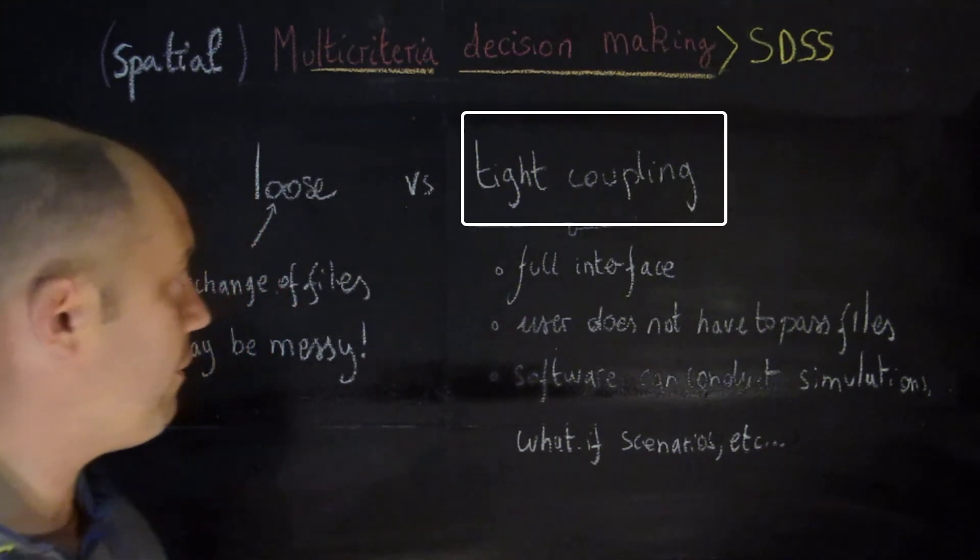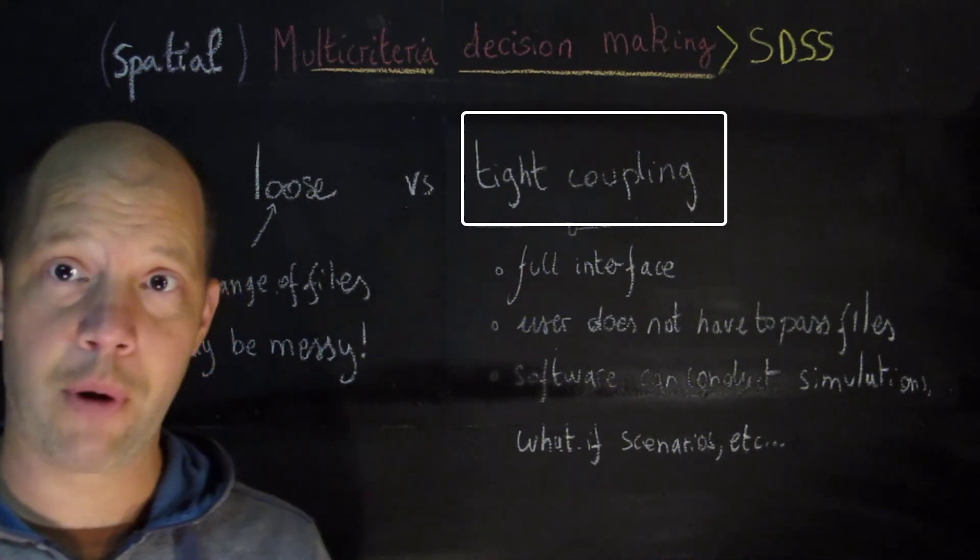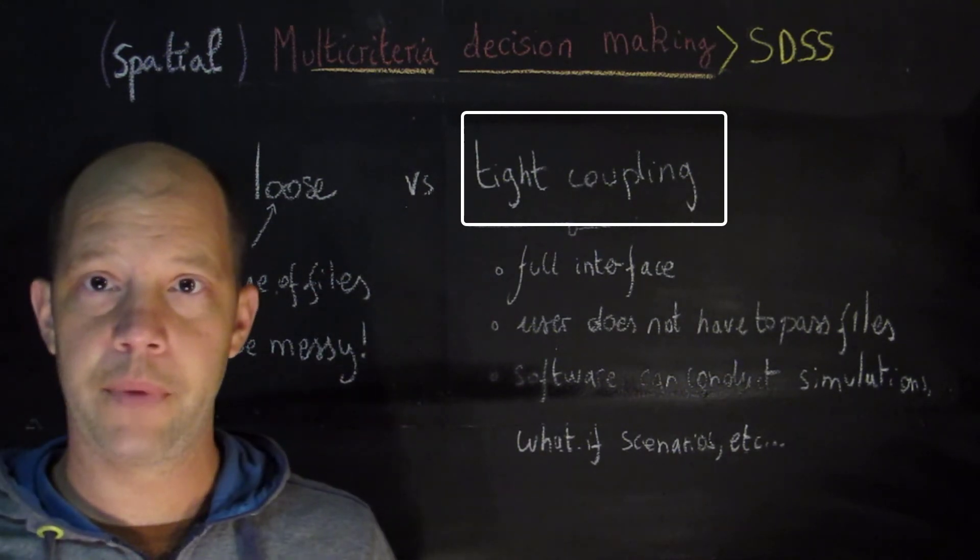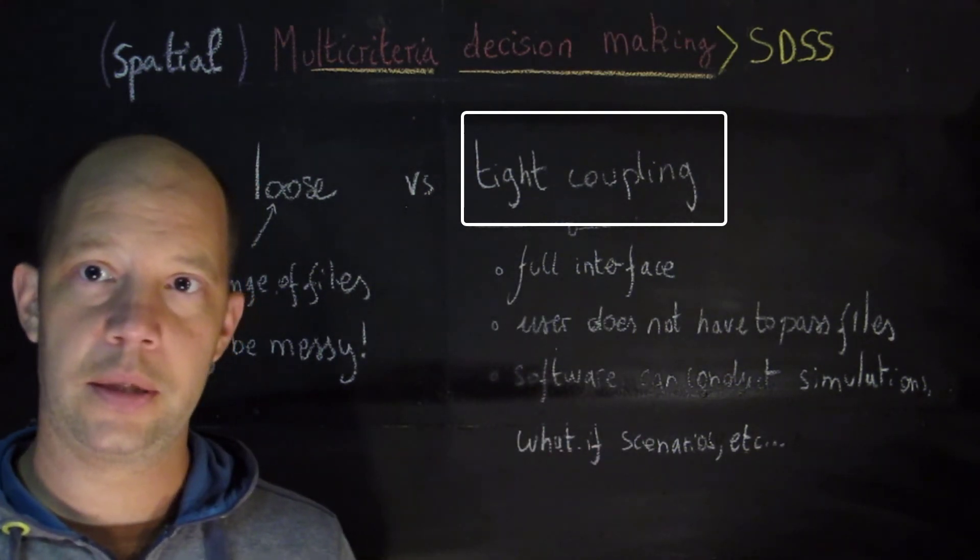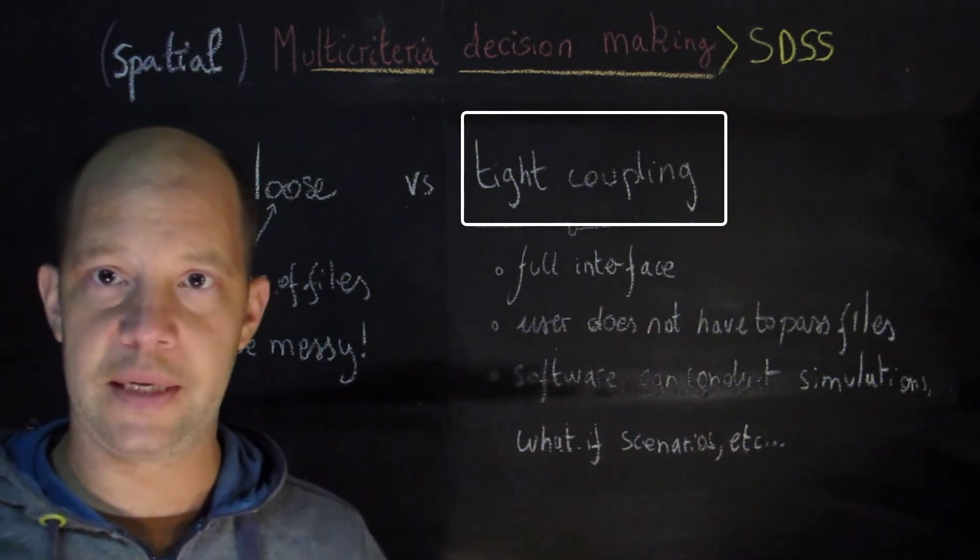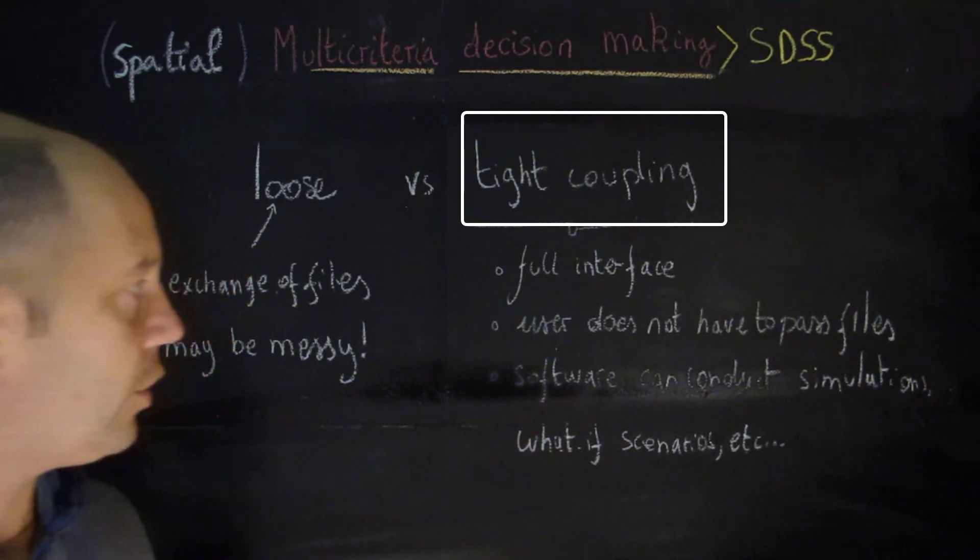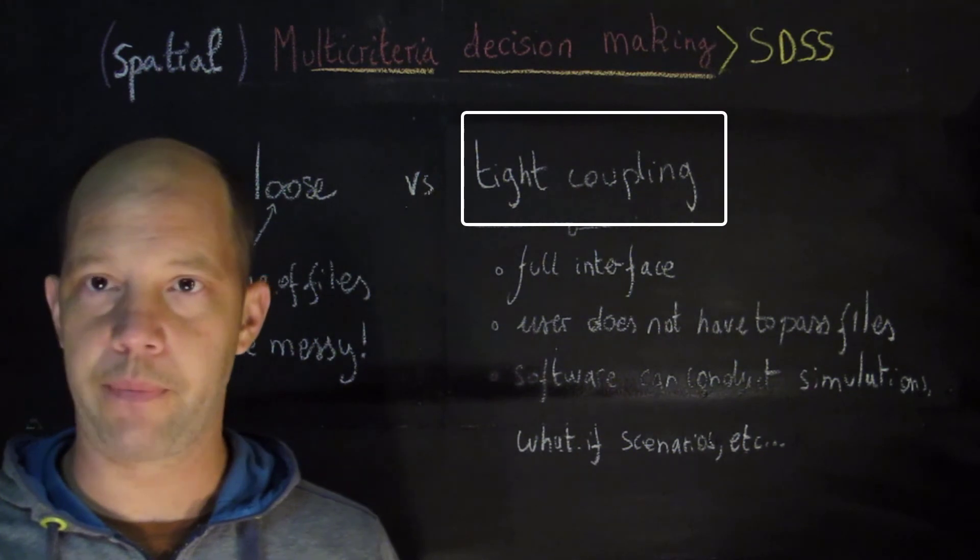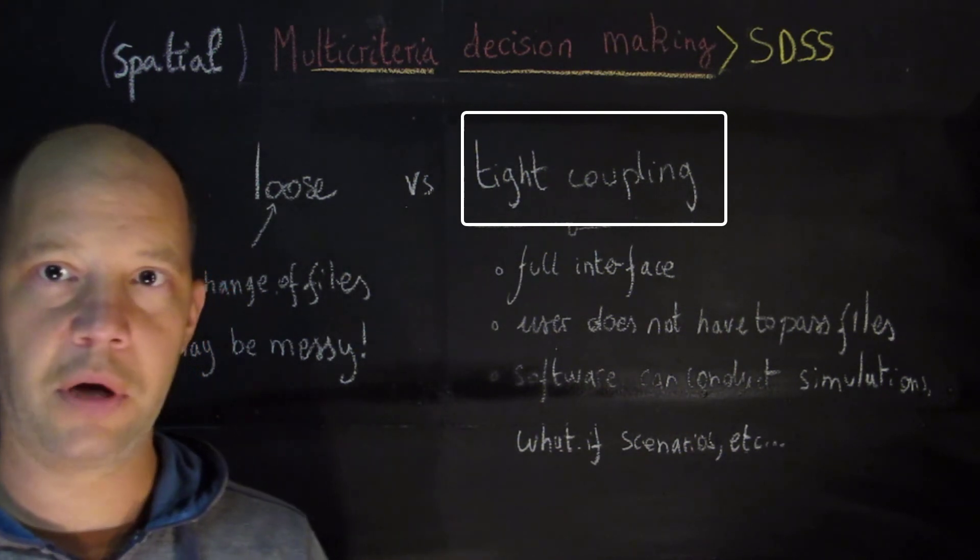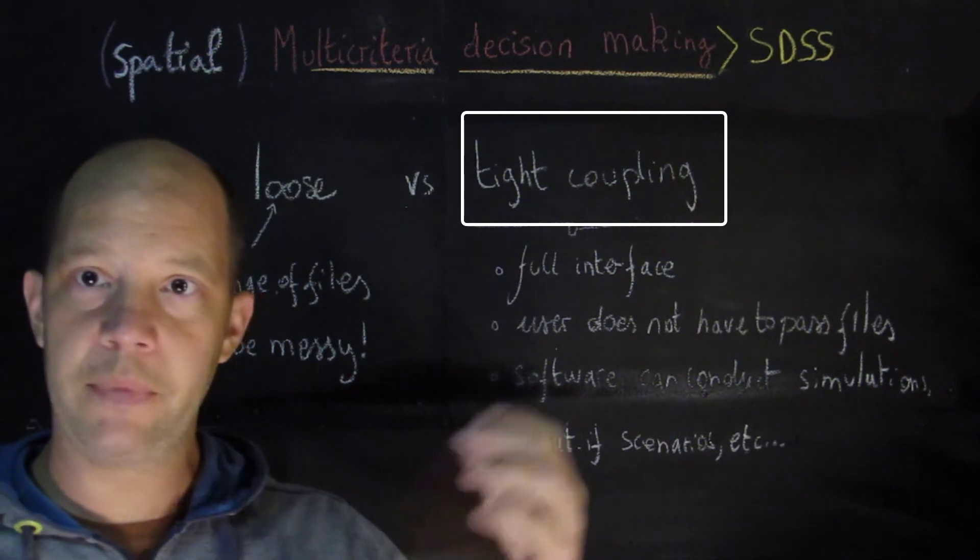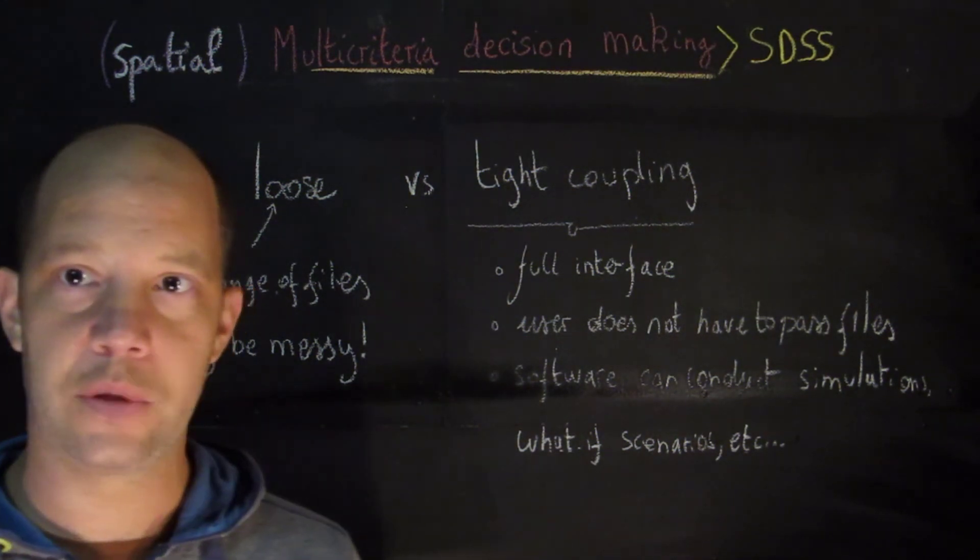A tight coupling approach, however, is much nicer but it's also much more demanding from a programming perspective. It is generally a full interface. Now remember, this is done for a specific purpose. So yes, a GIS is actually a tight coupling system, but it has so many different things that it can do that it's not really specific. The user does not have to pass files, and the software can conduct simulation, what-if scenarios, and so on. So in general, the tight coupling is a much better approach. But one of the things that you need to take into account is that maybe a tight coupling approach may have been programmed many years ago and it's not working anymore, while this loose coupling approach of exchange of files and so on may still be working.